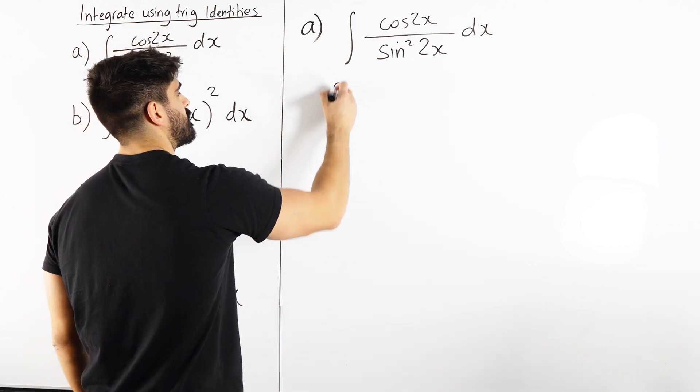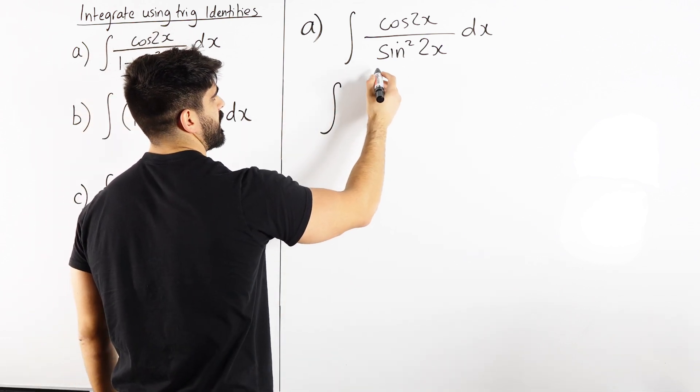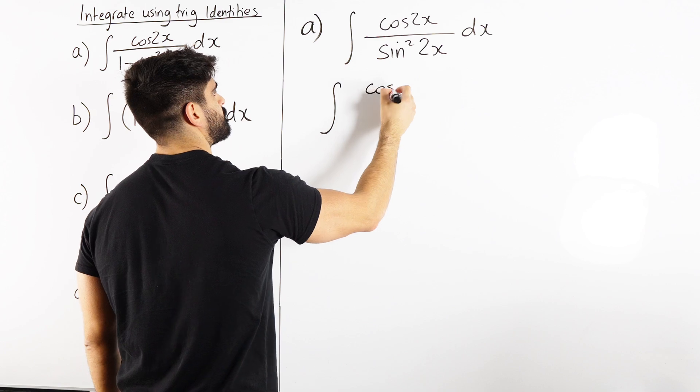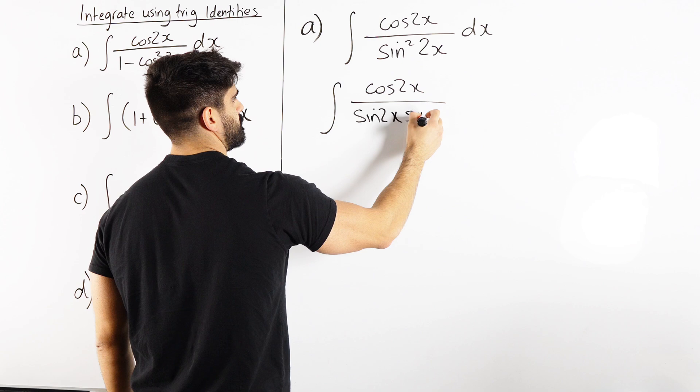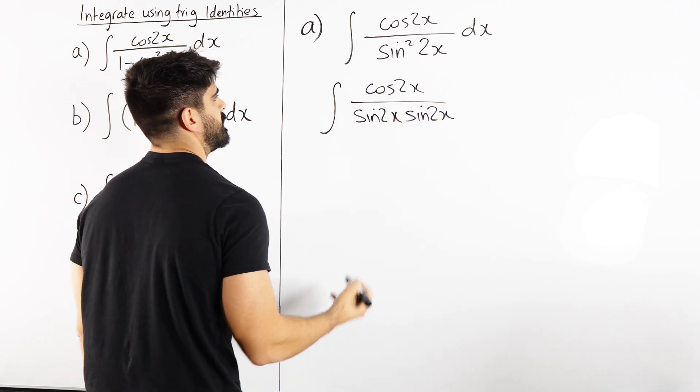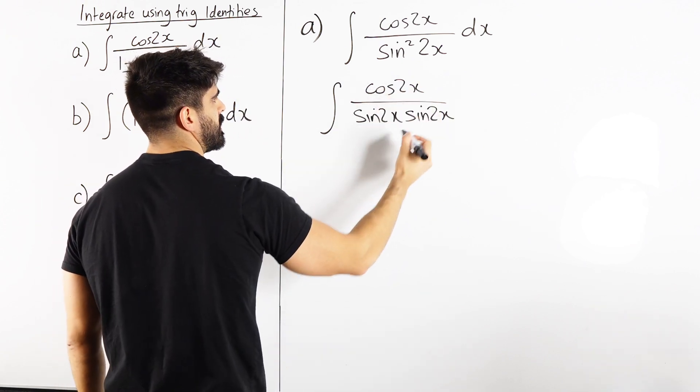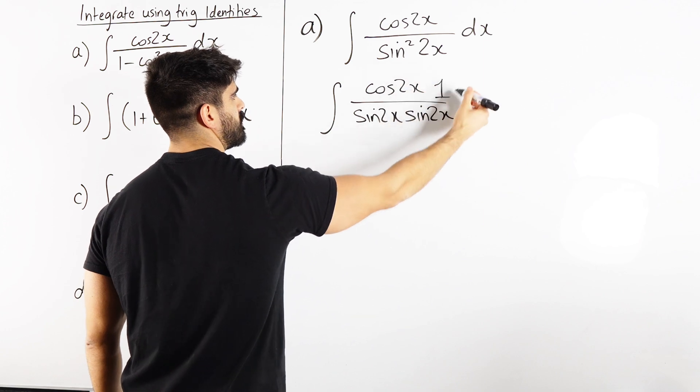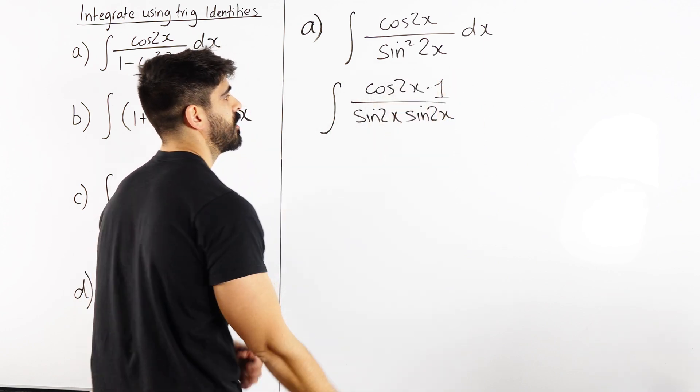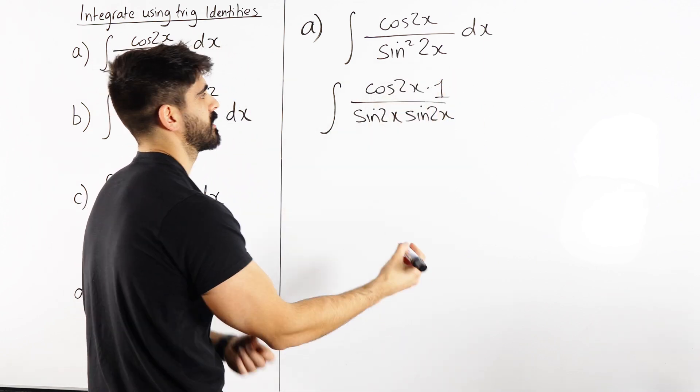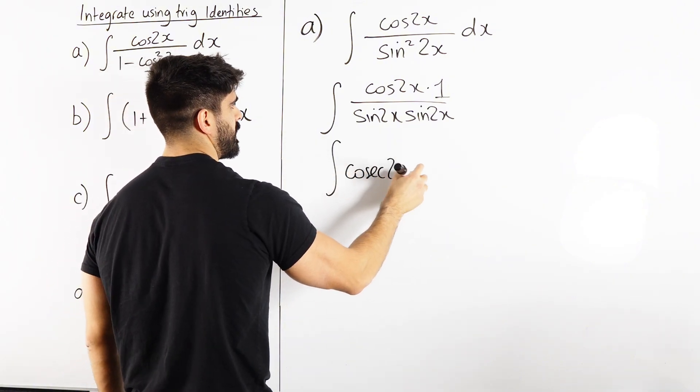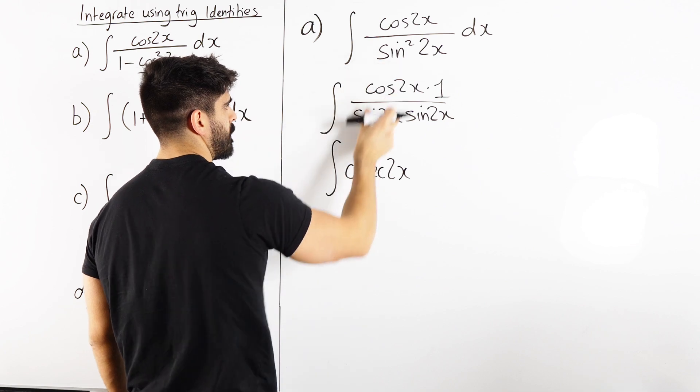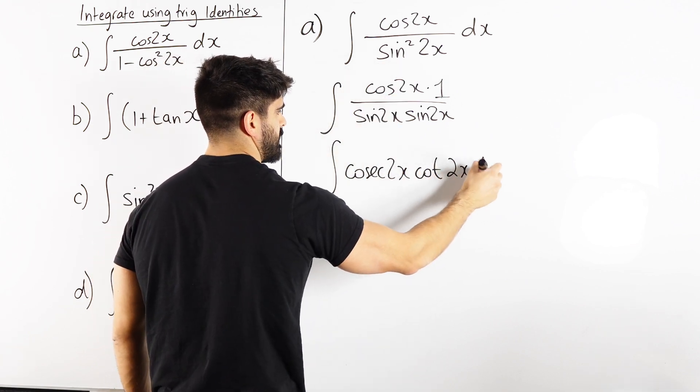So you're going to have to rewrite this. I'm going to rewrite this as that denominator being sine times sine. This is cot and this being a 1. 1 over sine 2x is cosec. So I'm going to rewrite this as cosec 2x times cosec 2x times cot 2x dx.